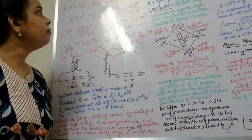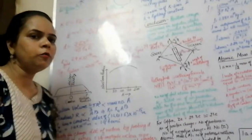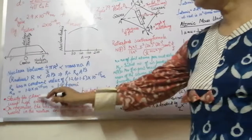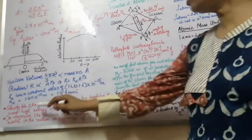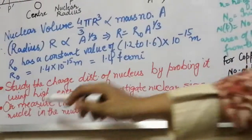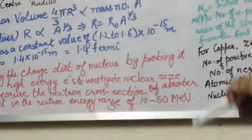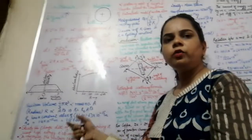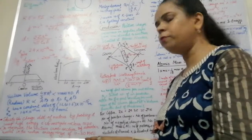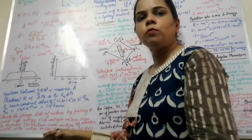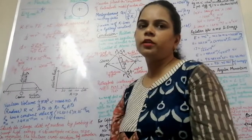There were several methods to study the nuclear size. One method involved calculating the nuclear size by studying the charge distribution of nuclei by probing with high-energy electrons. Another method was to measure the neutron cross section of absorber nuclei in the neutron energy range of 10 to 50 MeV, where the target element was bombarded with neutrons of that energy range and the neutron cross section was calculated, from which scientists could determine the nuclear size.